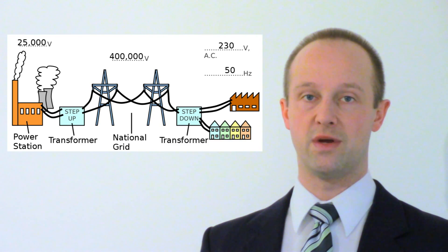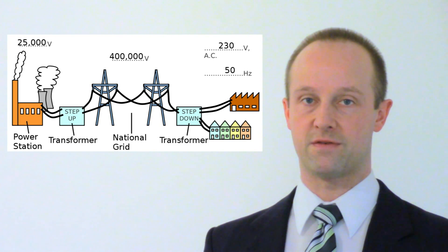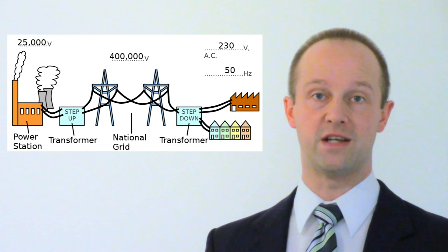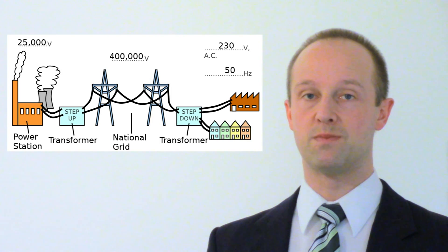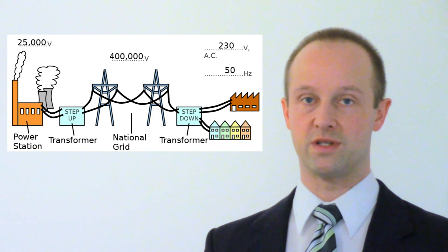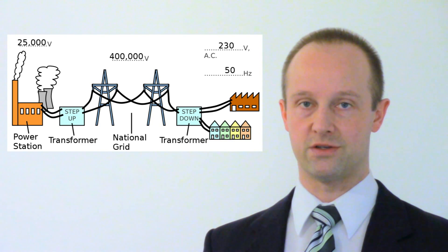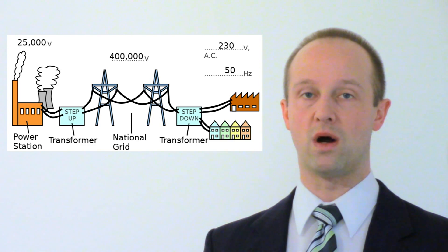A transformer which increases the potential difference in this way is known as a step up transformer because it steps up the potential difference. It increases it. These are used in the national grid to increase the potential difference after it's come from the power stations after it's been generated. It's much more efficient to distribute electricity at very very high potential differences and I'll explain why in just a sec.